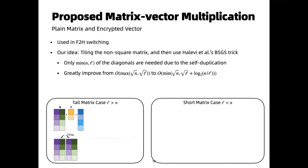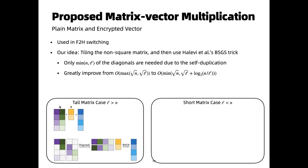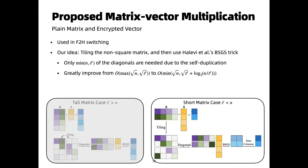We now present the proposed matrix-vector multiplication used in F2H switching. Here, the matrix A is given in plain and the vector S is encrypted. Our idea is to first tile the matrix A into a square matrix. Then we apply Halevi's diagonal trick to compute the matrix multiplication. We observe that only a few subsets of the diagonals are needed due to self-duplication. By doing so, the computation cost is greatly improved, particularly when the number of rows is far larger than the number of columns. Also, this tiling approach can cover the short matrix case with a logarithmic overhead.